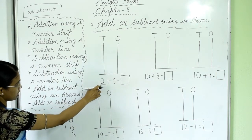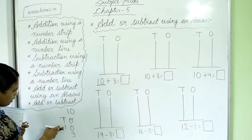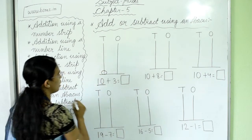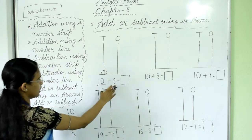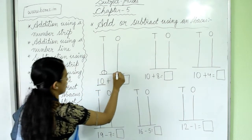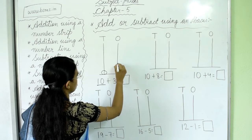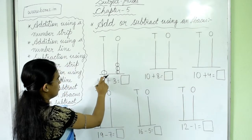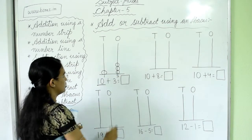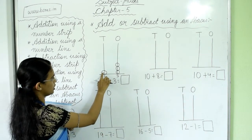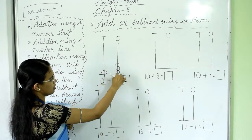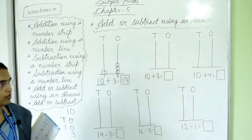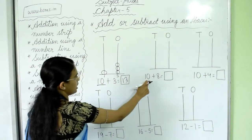The first number is 10: zero means nothing, and we have one in tens place, so draw one bead in tens place. We have three in ones place, so draw three beads there. 10 plus 3 equals 13 — one ball in tens place and three balls in ones place.